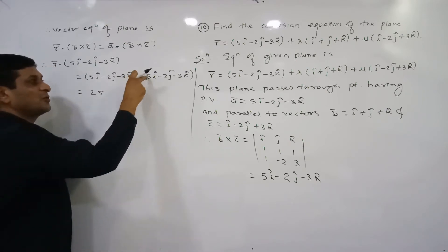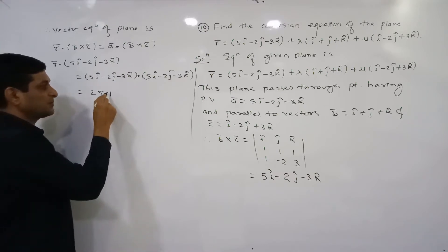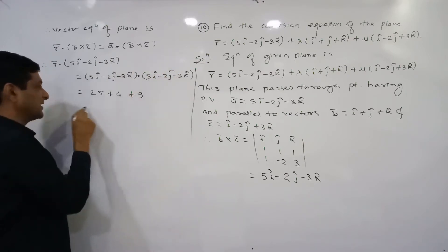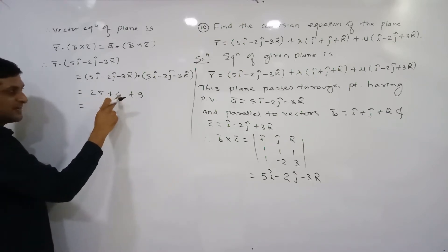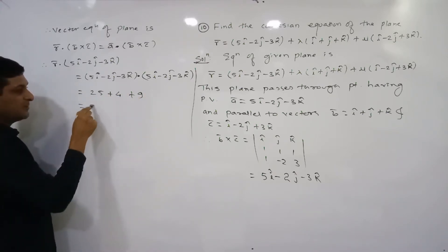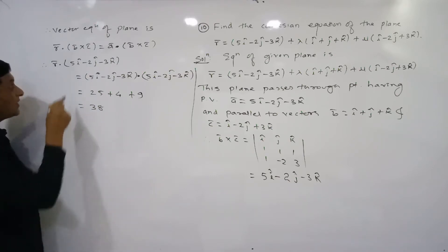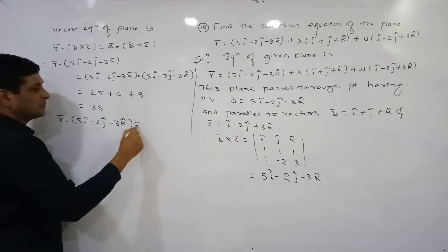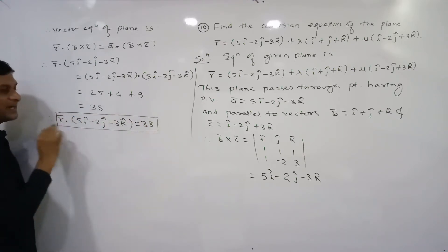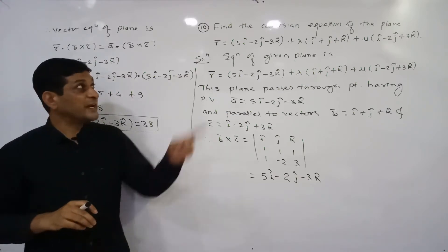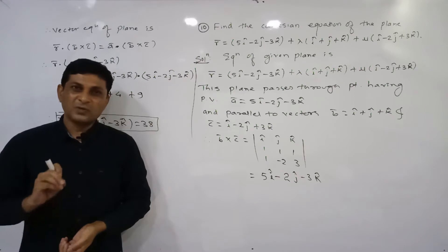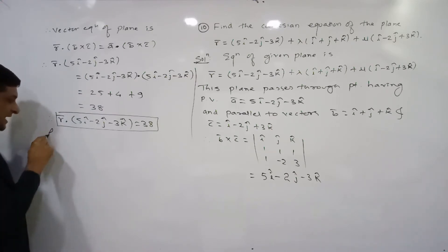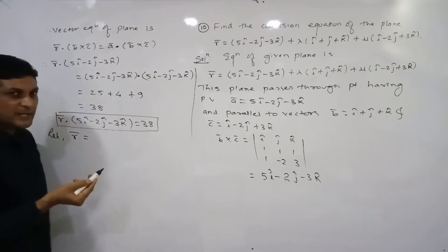Taking the dot product: product of î coefficients is 5×5 = 25; product of ĵ coefficients is (-2)×(-2) = +4; product of k̂ coefficients is (-3)×(-3) = +9. So the result is 25 + 4 + 9 = 38. Therefore r̄ · (5î - 2ĵ - 3k̂) = 38 is our required vector equation of the plane. Now we convert this to Cartesian form.